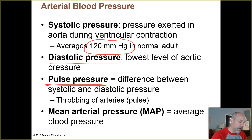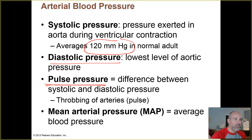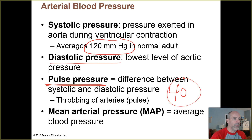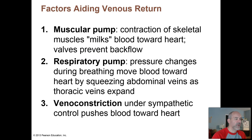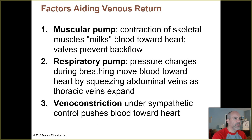Pulse pressure is another term you should be familiar with — that's the difference between the systolic and diastolic pressures. So if your systolic is 120 and your diastolic is 80, your pulse pressure is 40 mmHg. The mean arterial pressure, or MAP, is the average pressure that exists within a blood vessel at any given time.